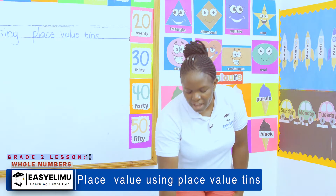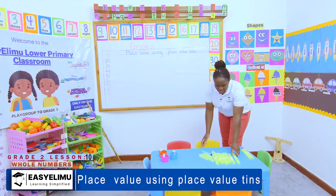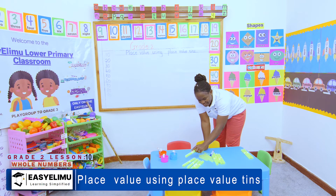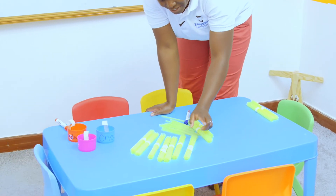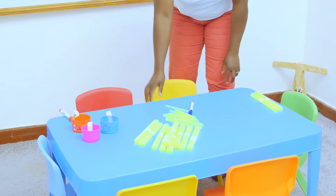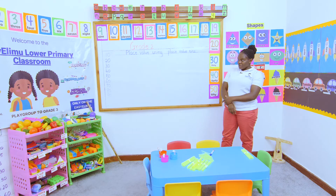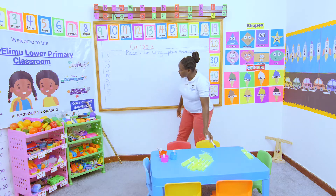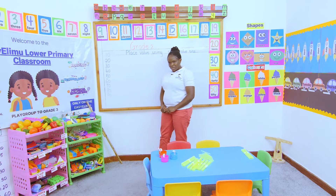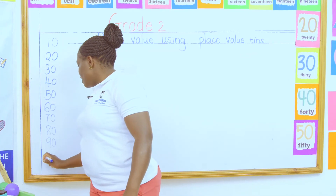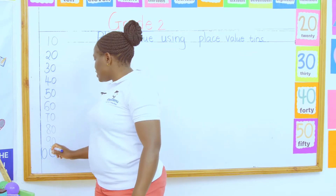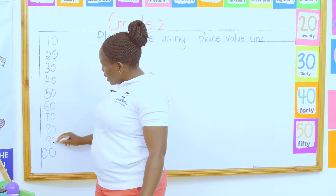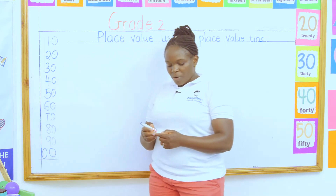I have added one ten, two tens, three tens, four tens, five tens, six tens, seven tens, eight tens, and nine tens. Which number follows after counting all the tens — 10, 20, 30, 40, 50, 60, 70, 80, 90? Nine tens are followed by 100. Now look at 100: ten has only one zero, but 100 has two zeros.